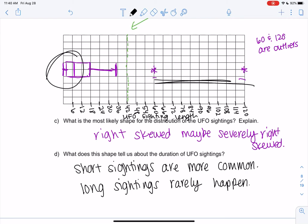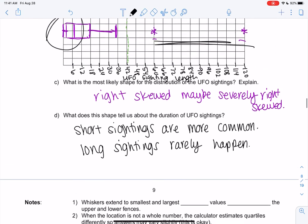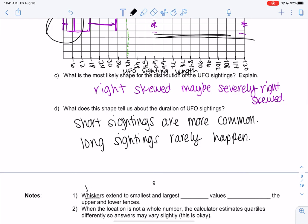This section just has one final example. So let's jump into it. Before we do that, the whiskers or the tails extend to the smallest and largest data values within the fence. So that's why we didn't go to 120 last time. It has to be inside the fences. Fences are like walls, you can't go past them. And then when location's not a whole number, the calculator just estimates, so they might vary a little. I already mentioned that.